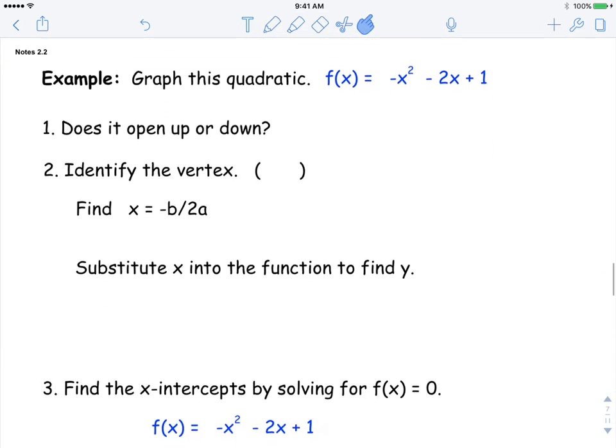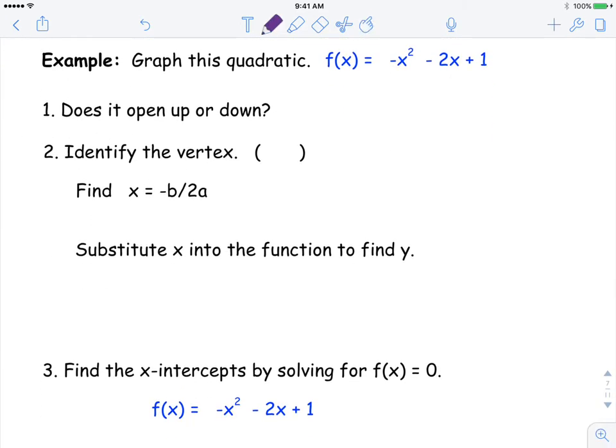So here's our example. Step one is to identify does it open up or down. We're going to identify the a as negative one, the b is negative two, and the c is one. So since my a value is negative, it's going to open down.